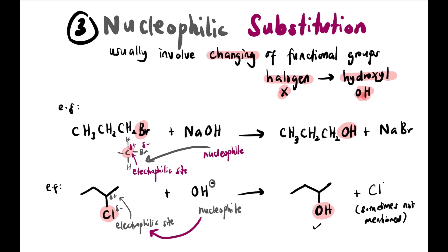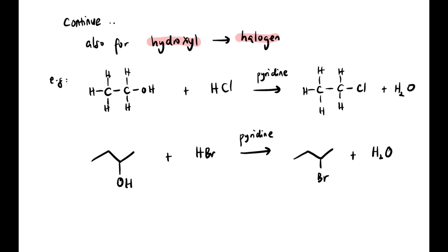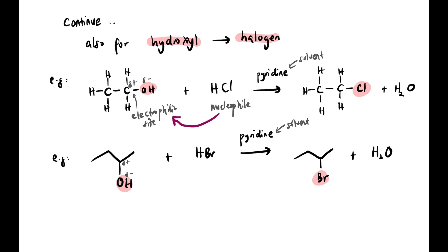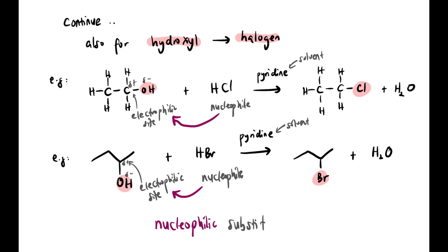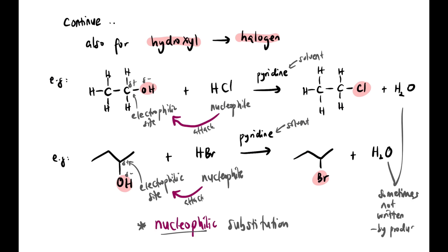Nucleophilic substitution also applies when hydroxyl changes to halogen. For example, OH converts to Cl, or OH converts to Br with pyridine as solvent. The carbon attached to OH is partially positive — the electrophilic site — attacked by a nucleophile, so the reaction is called nucleophilic substitution. The by-product H2O is sometimes not mentioned in questions but is still present.